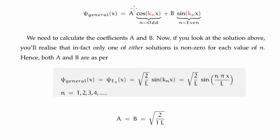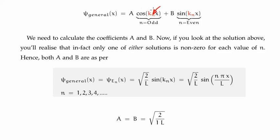So what's left to do is calculate the coefficients A and B, which of course involves normalising the wave function. If we look carefully, we don't really need to do that from scratch. We know the wave function is alternately either a cosine or a sine, because when n is even this term goes to zero and when n is odd this term goes to zero.